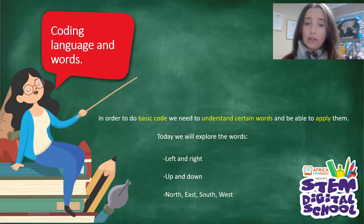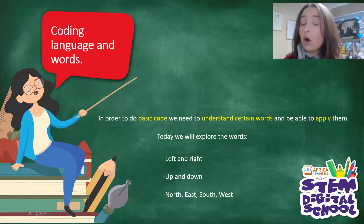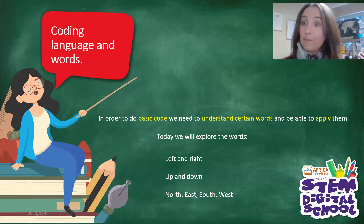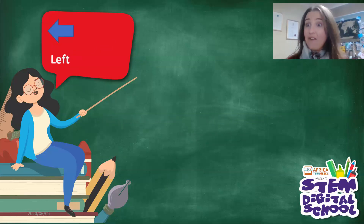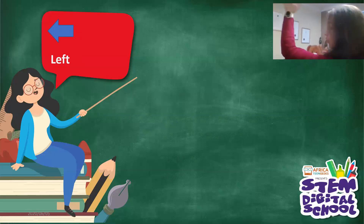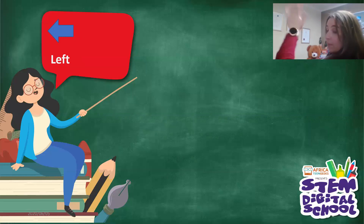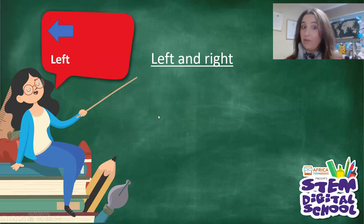And then we're going to do north, east, south and west, and we are going to use our left and right and up and down to learn that. Let's try this — we are going to do left. Our arrow here points left, so that means it is pointing to this side, to the side where my watch is. When you see our blue arrow, it is left.